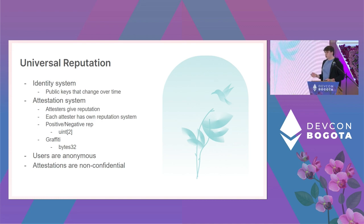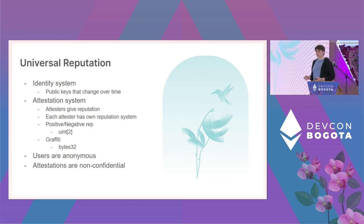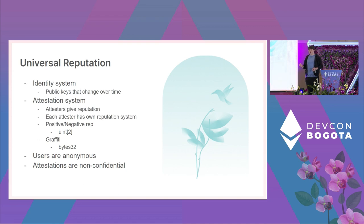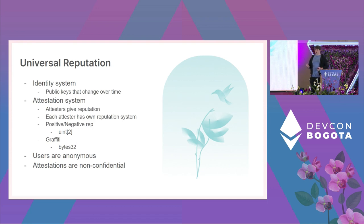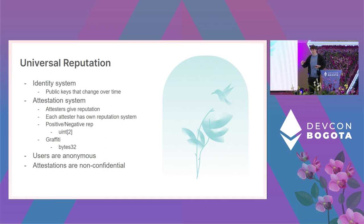One example use case: an attester can allow users to register a username. The user requests a username, and then the attester attests by giving the hash of the username as graffiti to the user. When the user makes a proof, they can prove the pre-image of the graffiti and move from anonymity to pseudonymity — that's a relatively simple example.